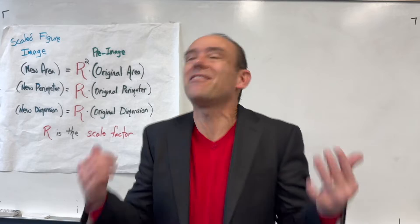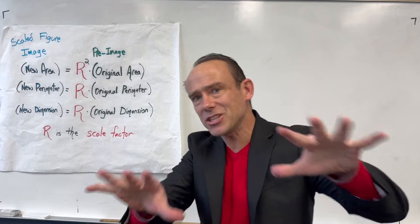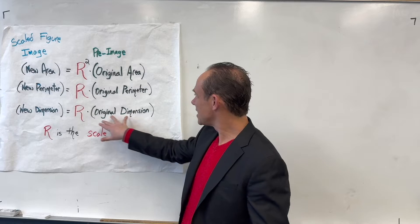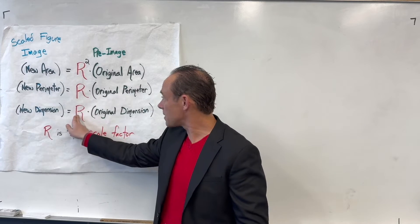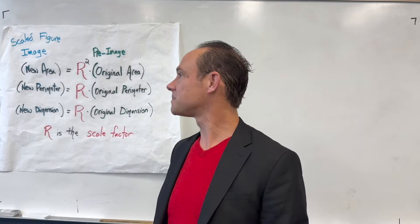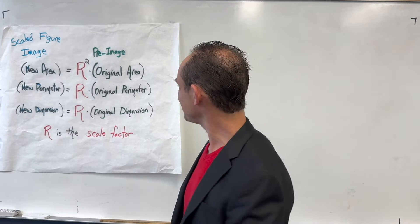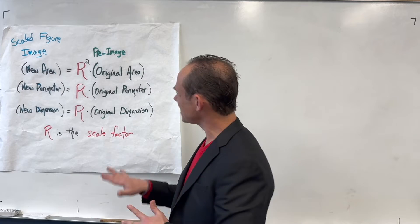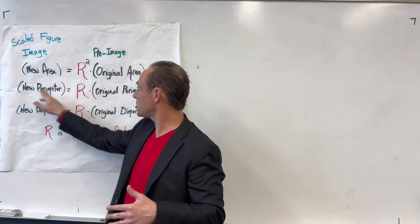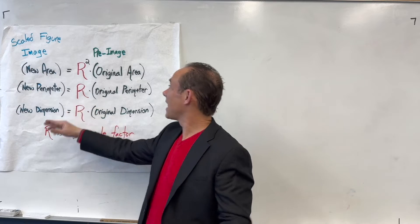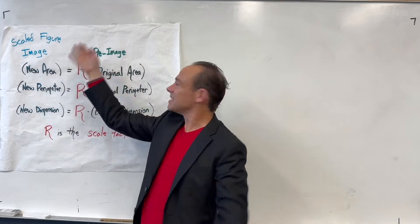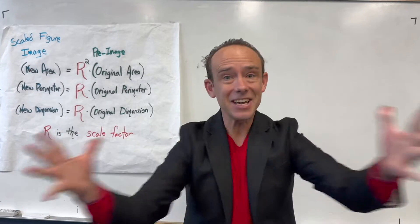I made this poster that pretty much defines everything we're gonna need to do. Students generally already know that if you scale an object and multiply the original dimension by the scale factor, you get the new dimension. But what this video is more interested in: if you know the perimeter and the scale factor, the new perimeter is just the old perimeter multiplied by the scale factor. And if you know the area of the original object, the new area is just the original area times the square of the scale factor.